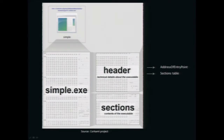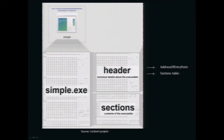To understand how a packer can be made, we must investigate the Portable Executable file format, which is made by Windows. As usual with file formats, we have a header and a data blob right behind it. The header contains a lot of fields, two of which are really useful for a packer. First, we have the address of entry point, which is a pointer into the data section where execution will start. We use this to hijack the execution flow in order to execute our stub first.